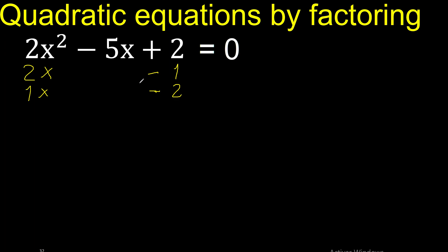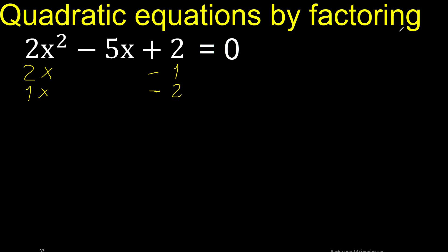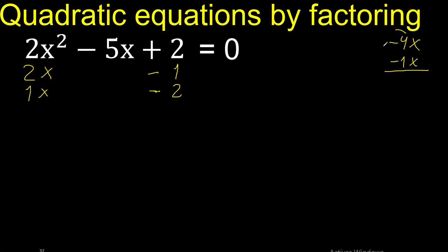Let's analyze if it is correct. 2 multiplied by 2 is 4, minus 4x here. 1 multiplied by 1 is 1, minus 1x. That gives minus 5x — equal. Therefore it is correct.